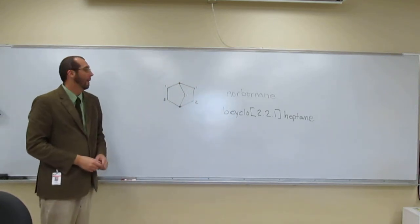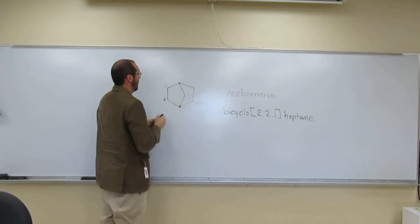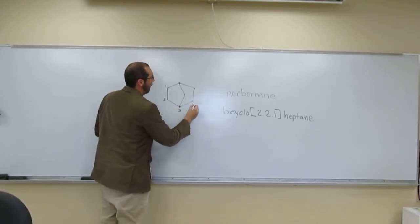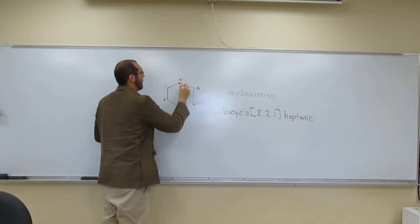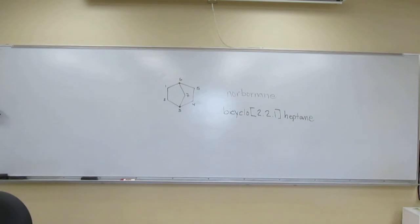And then the heptane, hopefully you all can see, right, it's a different numbering scheme. One, two, three, four, five, six, seven. So since there's seven carbons, it's a heptane. Any questions on that one?